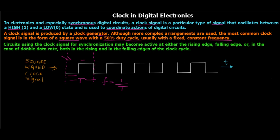And the last theoretical point is circuits using the clock signal for synchronization may be active at either the rising edge, falling edge or in case of double data rate both in rising and the falling edges of the clock cycle and also at a particular level. So this is something which we will see in the next video tutorial that is the triggering methods and techniques that we use to trigger the flip-flop using this clock. So right now let's just understand what a clock is.